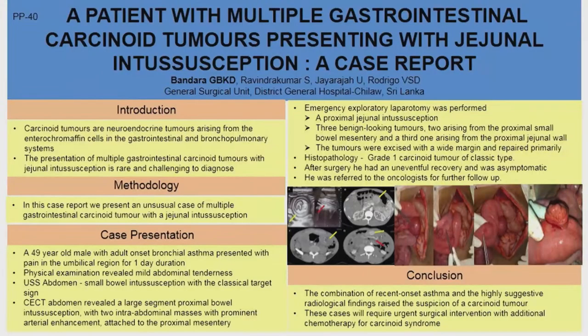This is a case report of a patient with multiple gastrointestinal carcinoid tumors presenting with gastrointestinal intussusception. Carcinoid tumors are infrequent tumors of neuroendocrine origin, arising from neuroendocrine cells in the gastrointestinal and bronchopulmonary systems. Unless these tumors present with the classical symptoms of carcinoid syndrome, they don't have specific symptoms, making them very difficult to diagnose.